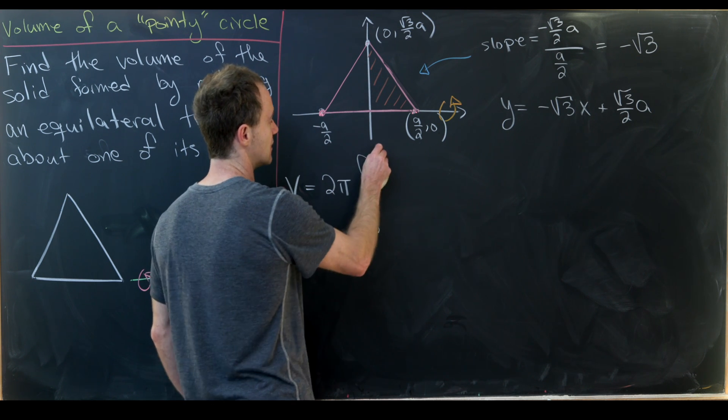So in fact we can rephrase our goal of determining this volume as determining the volume that we gain from rotating the region bound by the x-axis and this curve about the x-axis. So our volume will be equal to two times pi times the integral from zero to a over two of minus square root of three x plus square root of three over two times a all of that squared dx.